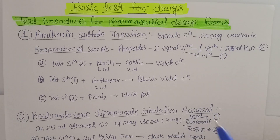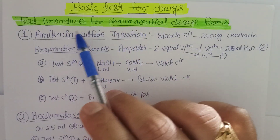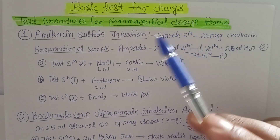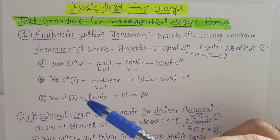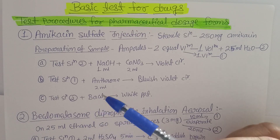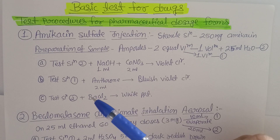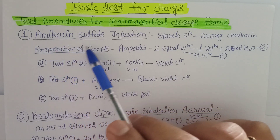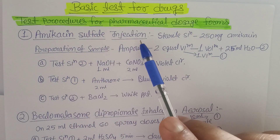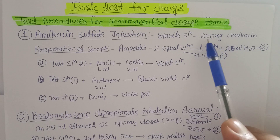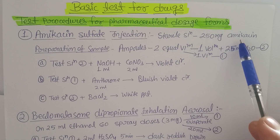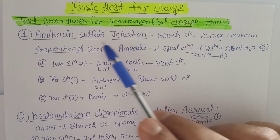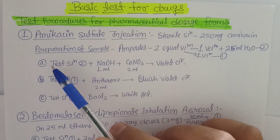Let's start with the test procedure for pharmaceutical dosage forms. The first important drug, starting from alphabet A, is amikacin sulfate injection. It is a sterile solution containing 250 mg amikacin — a parenteral product in the form of a sulfate salt.